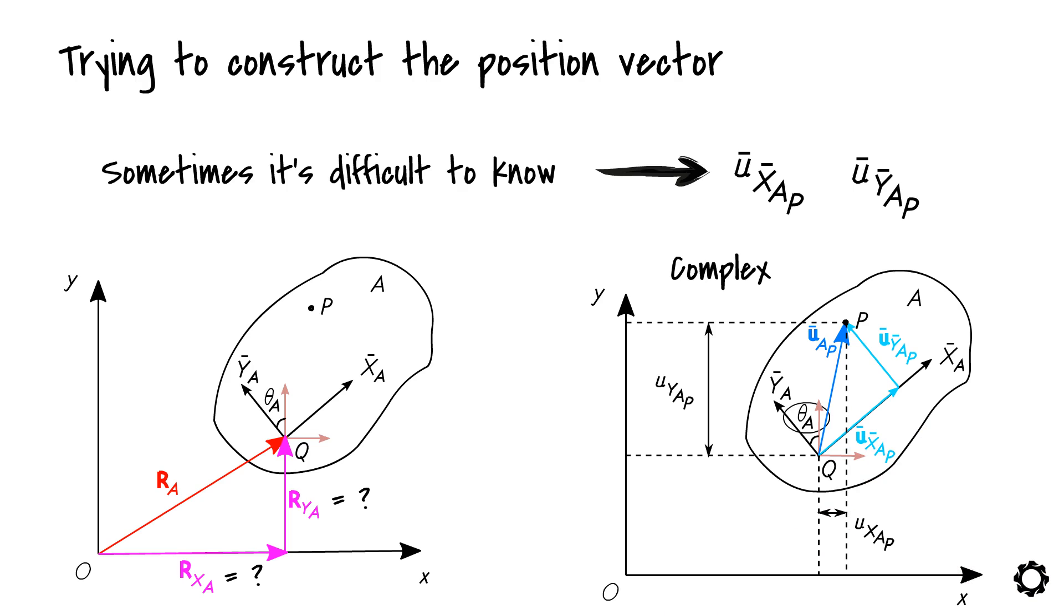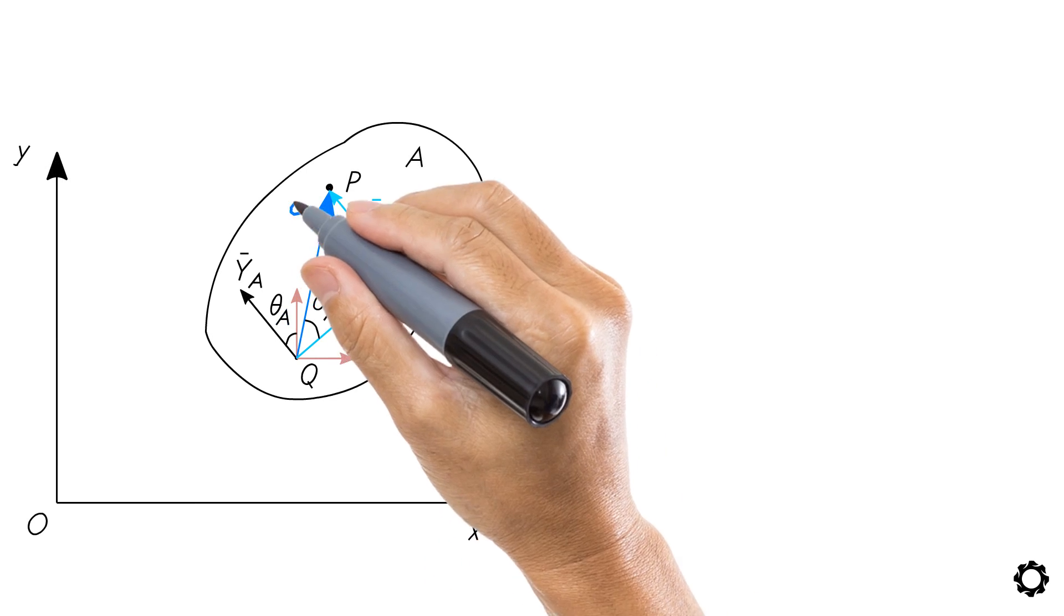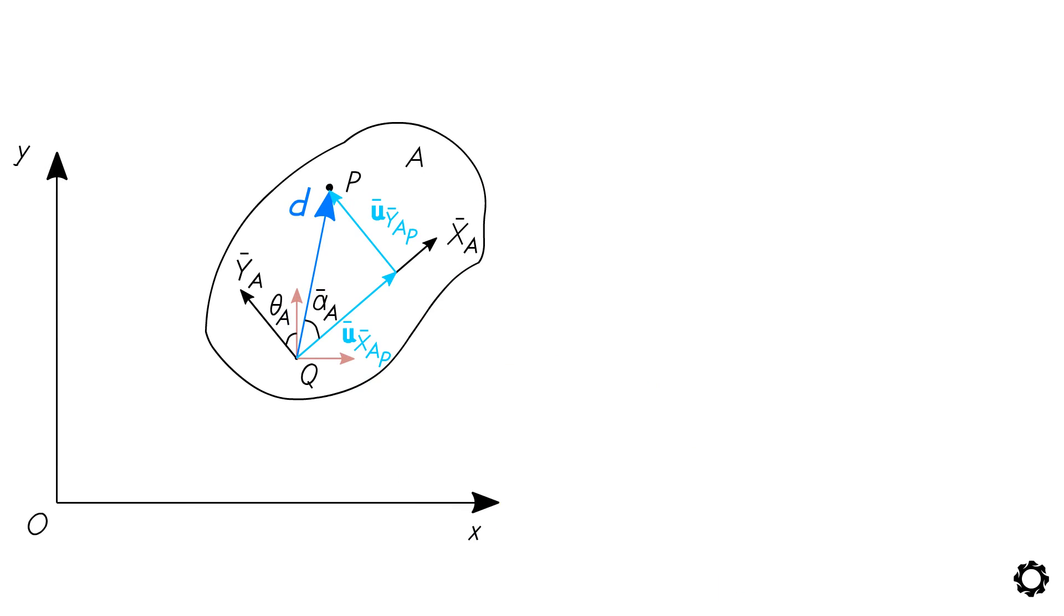For sure, it is easier to know the fixed distance between point P and the origin of the local coordinate system. For example, if we call this fixed distance d and we construct the local vectors u̅_x̅_ap and u̅_ȳ_ap using this distance.